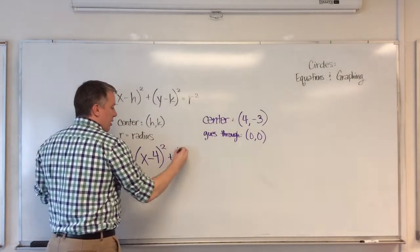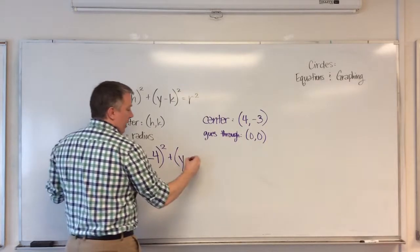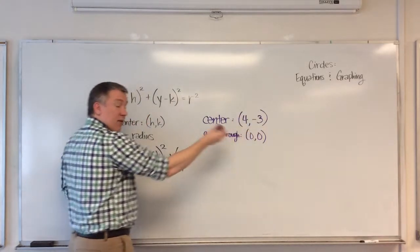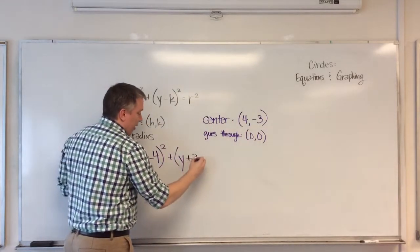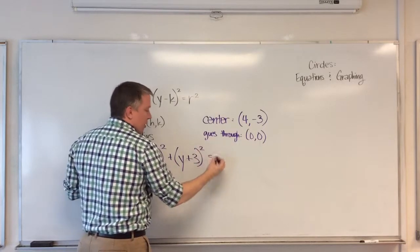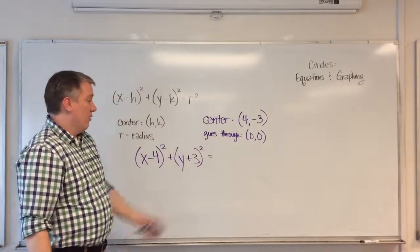plus y minus, minus a negative is positive. So plus 3 squared is equal to, now the only thing I don't know, is the radius.